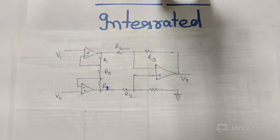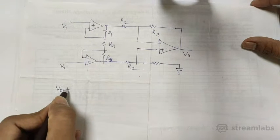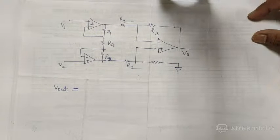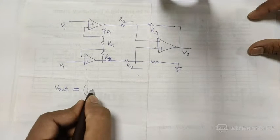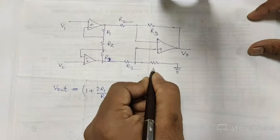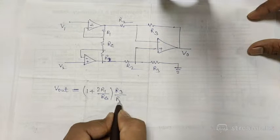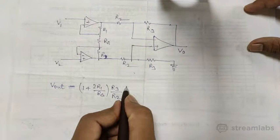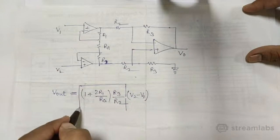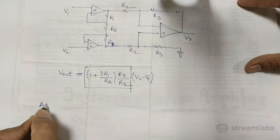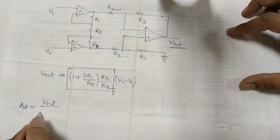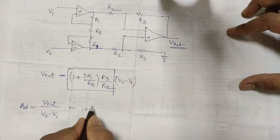Many of you have solved this problem correctly. The answer is that the gain equals 1 plus 2R1 upon Rg, multiplied by R3 divided by R2, into V2 minus V1. This portion is actually the differential gain. So Vout upon V2 minus V1 equals 1 plus 2R1 upon Rg, multiplied by R3 divided by R2.